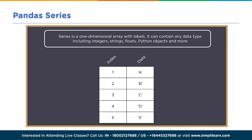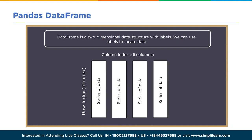A data frame is a two-dimensional data structure with labels. We can use labels to locate data. Each series shares the same index — the row index, df.index — and then you have a column index, df.columns. This would look familiar if you've done any work with spreadsheets or Excel. It makes it much easier to manipulate data, add columns, delete columns, move them around, and the same with rows.